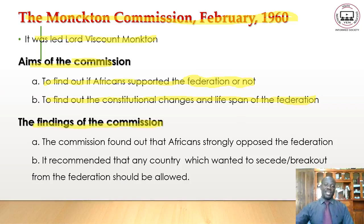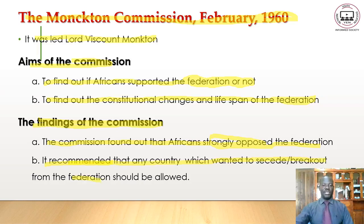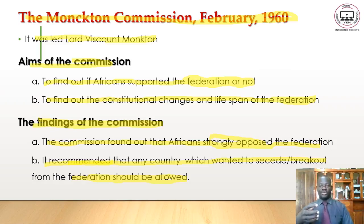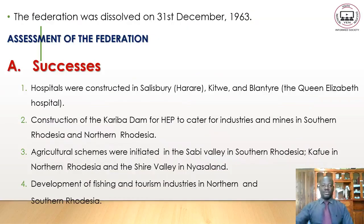The Monckton Commission found that Africans strongly opposed the federation and recommended that any country which wanted to secede or break out from the federation should be allowed to do so. Because Africans opposed the federation, they must be allowed to secede. The federation was therefore dissolved on 31st December 1963.